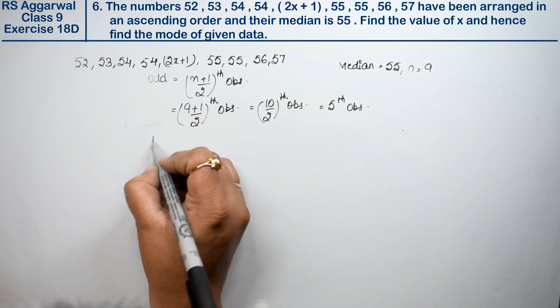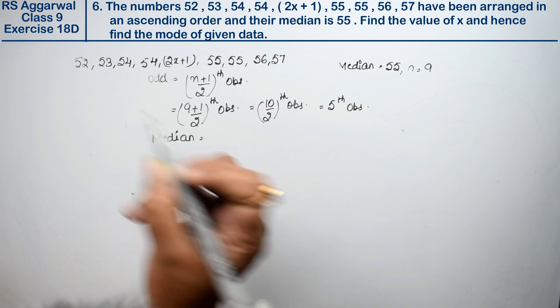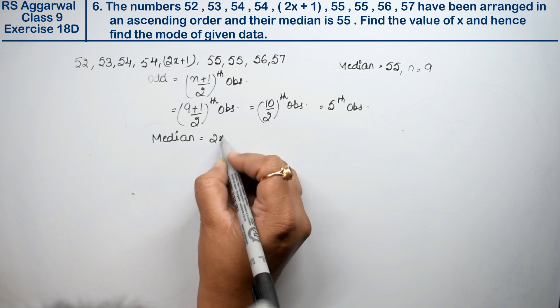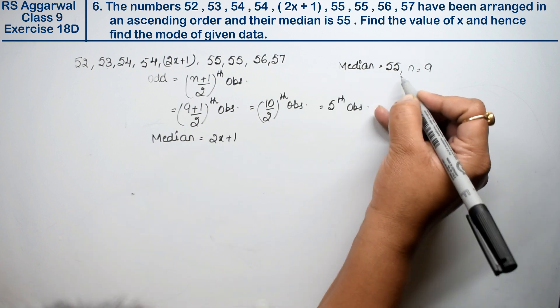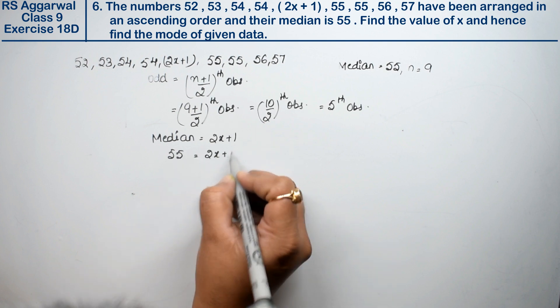The median is the 5th observation. Let's count: 1, 2, 3, 4, 5. That's 2x plus 1. Now the median is 55, so 55 equals 2x plus 1.